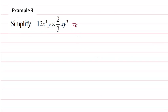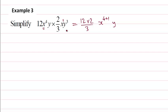Example three: first 12 times two-thirds, so we write 12 times 2 divided by 3. Then we have x to the power 4 and x to the power 1, so we add 1. Then y to the power 1 and y cubed, so we add 3. 12 times 2 divided by 3 is 8, giving us x to the power 5, then y to the power 4.